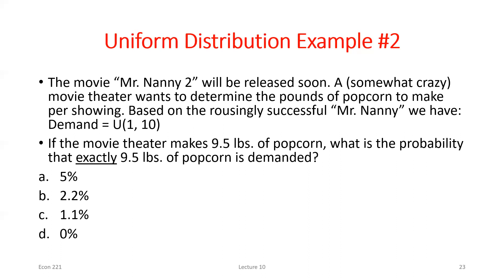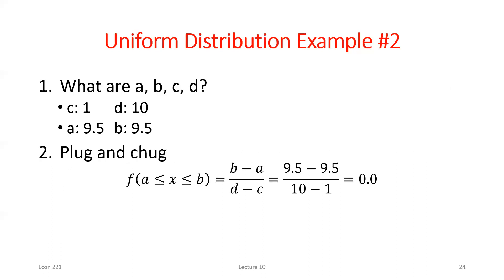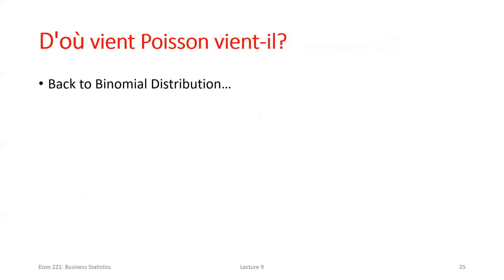Any questions on this before we move on? I'm going to go through something interesting in the last five minutes — a way to relate the binomial and Poisson distributions. It's almost like starting some review, working backwards toward the binomial.